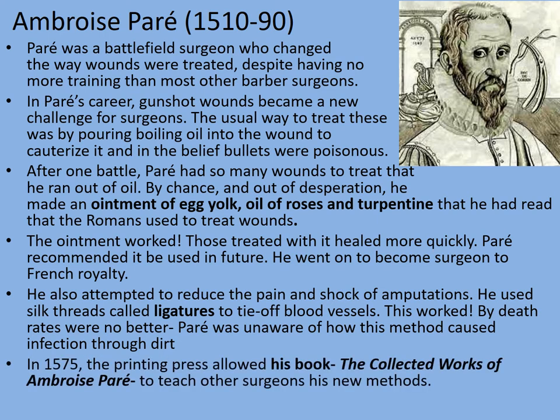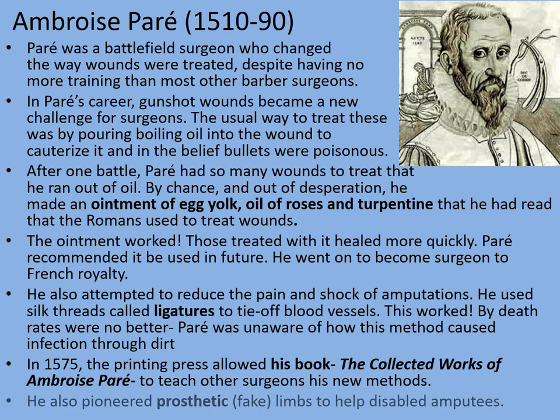In 1575, the printing press allowed his book The Collected Works of Ambrose Paré to teach other surgeons his new methods. He also pioneered some very early prosthetic limbs, including hands, to help disabled amputees — particularly significant given the large number of amputations resulting from battlefield injuries with the new gunpowder weapons of the age.